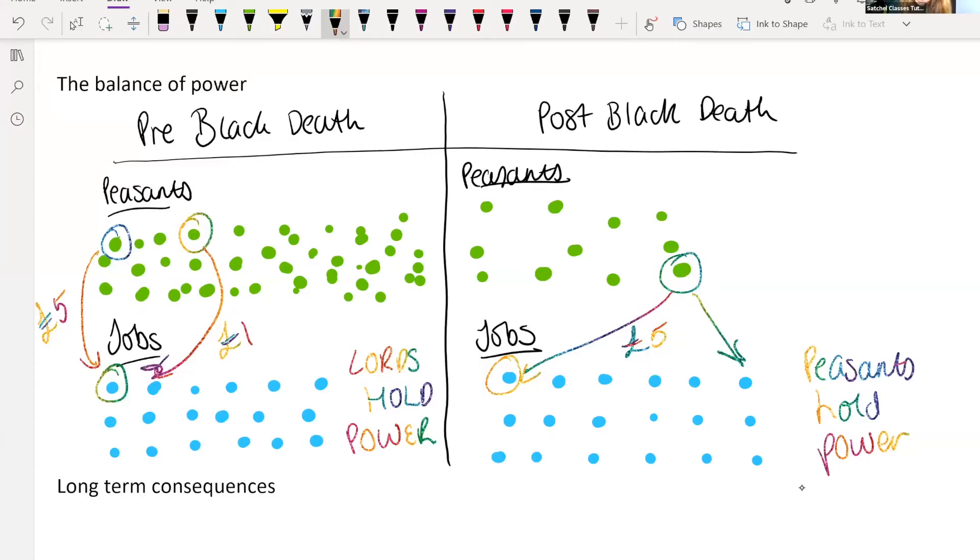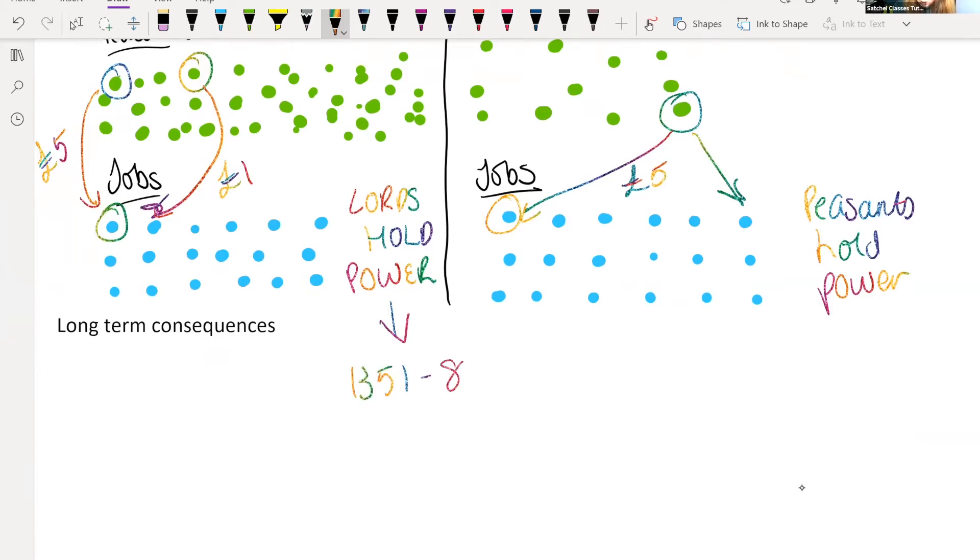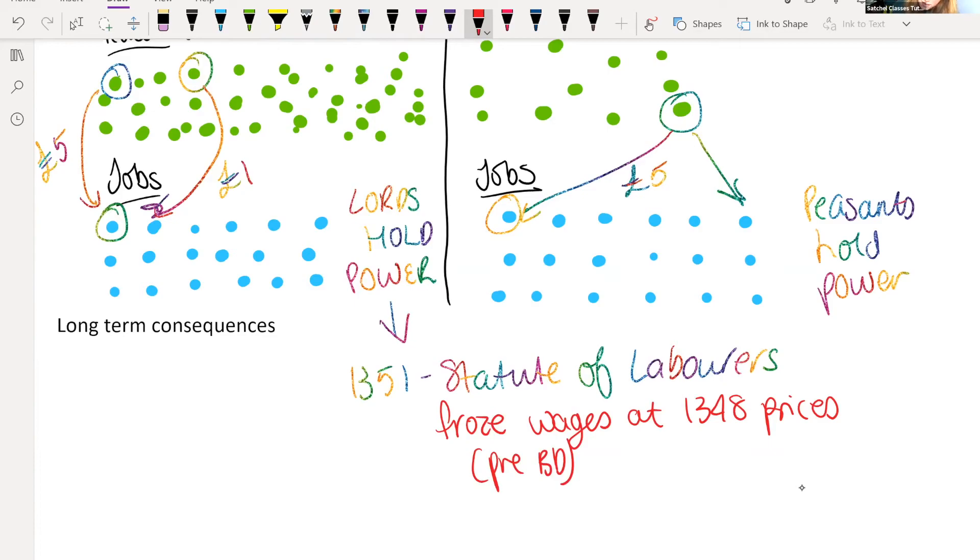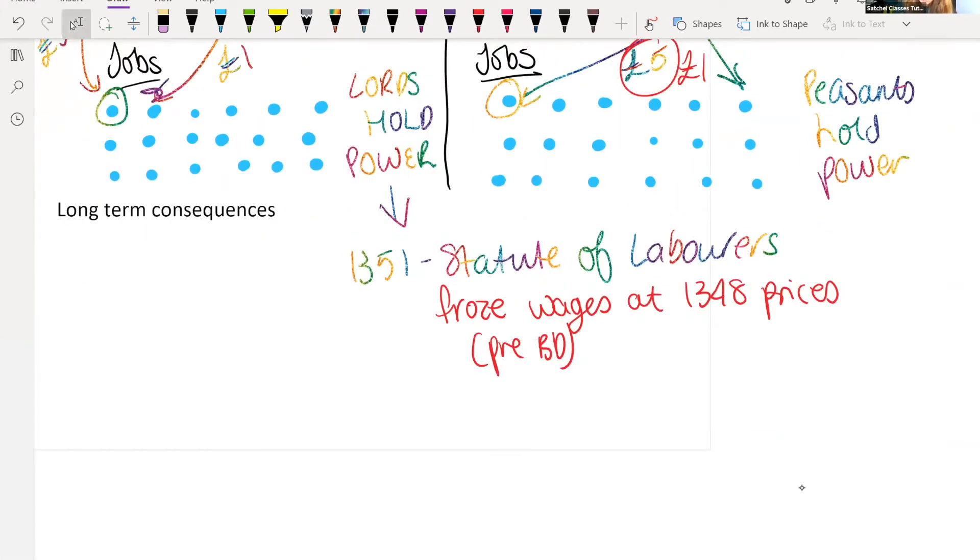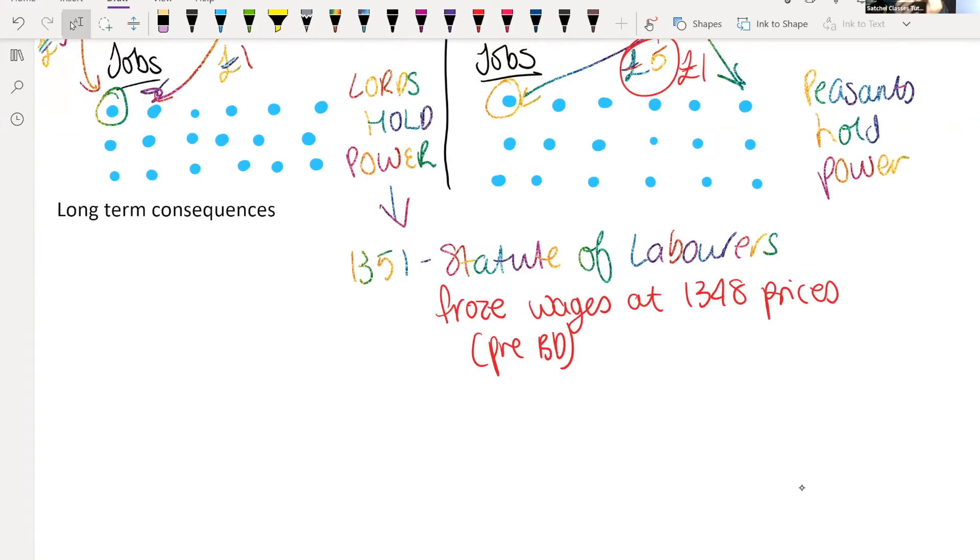They wanted to keep that balance of power as it was. So in a way to keep it like this, the Lords holding the power, they brought something in in 1351 called the Statute of Labourers. And what this did was it froze wages at 1348 prices, and that is pre black death. And that meant that this five pounds now couldn't be offered. The peasants could still only have one pound, even though they knew that they were more valuable. The Lords with the shoes, with the food that they could eat, with the wages that they were giving them, they were trying to contain them.